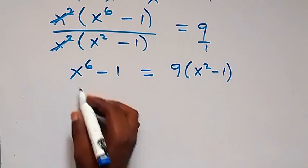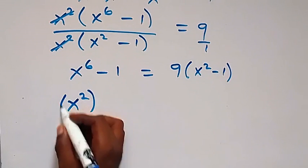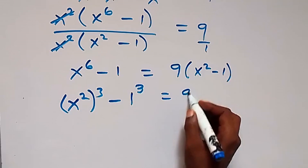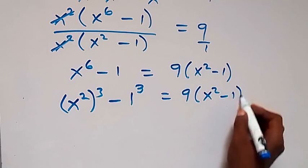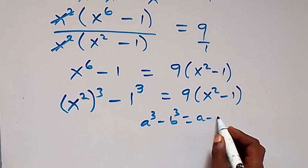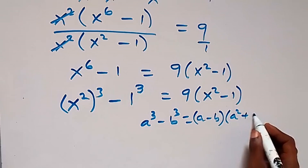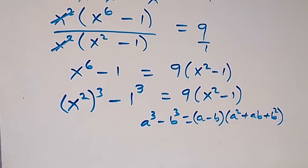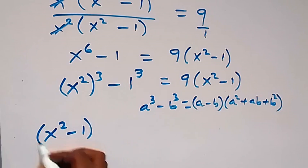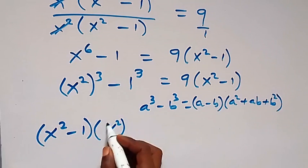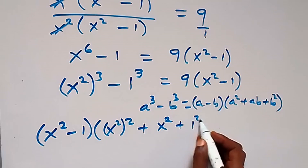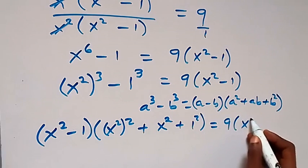From here we can write this as x squared raised to power 3, minus 1, and 1 can also be written as 1 raised to power 3, which equals 9 into bracket x squared minus 1. Then from this we use the identity: a^k minus b^k gives us a minus b, into bracket a squared plus ab plus b squared. So here a is x squared, giving us x squared minus 1, times x squared plus x squared times 1 plus 1 squared, equals 9 into bracket x squared minus 1.